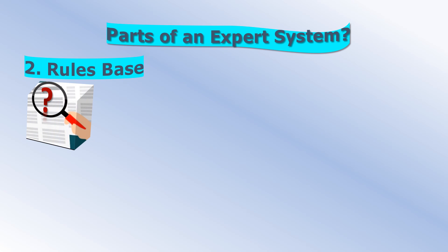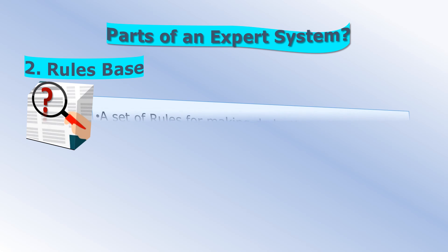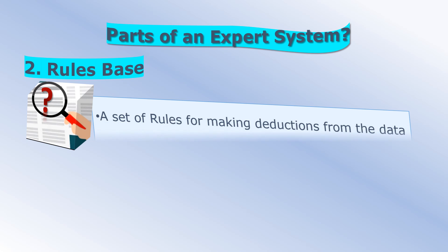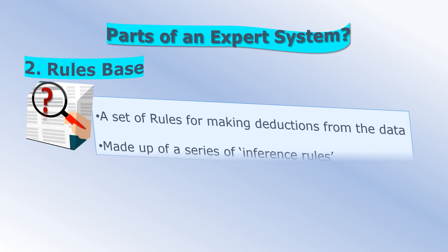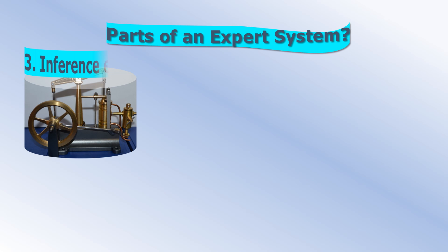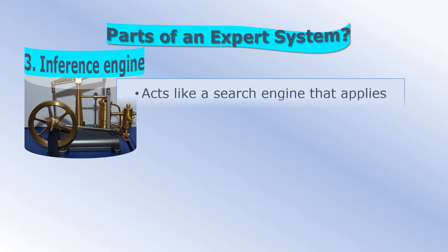Next is the rules base. It is a set of rules for making deductions from the data. This is made up of a series of inference rules represented mainly as if-then rules. These inference rules closely follow human reasoning and are used by the inference engine to draw conclusions.